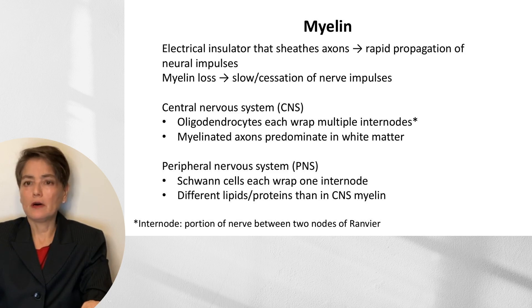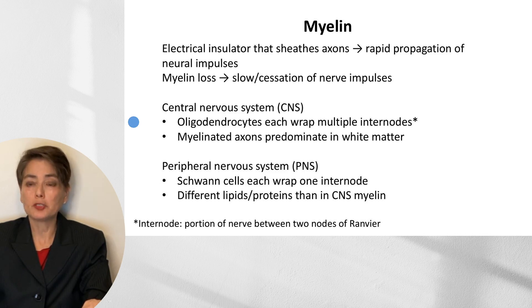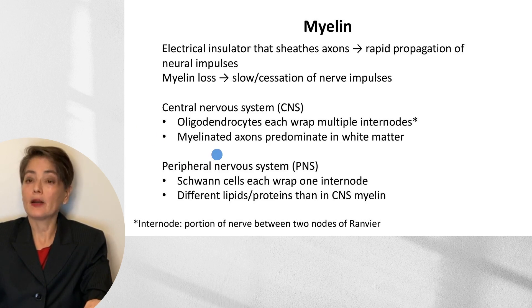As you'll recall, there are really two types of myelin. We have the central nervous system and the peripheral nervous system. In the central nervous system, the cells that generate myelin are the oligodendrocytes, and each oligodendrocyte can wrap multiple internodes. Internodes are that portion of nerve between two nodes of Ranvier. Myelinated axons will predominate in our white matter, which is why it has that whitish appearance.